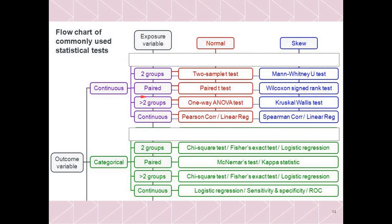For more than two groups — for example, finding the difference in effect of drugs A, B, and C on fever — we use the one-way ANOVA test if the data is normally distributed, and the Kruskal-Wallis test if it is skewed. For continuous variable comparisons, such as age versus temperature, we use Pearson's correlation for normal distribution and Spearman's correlation for skewed data. To see the prediction of one variable from another, we use linear regression.